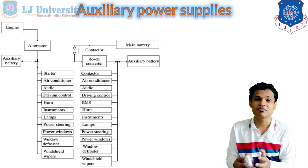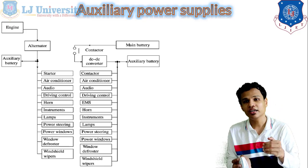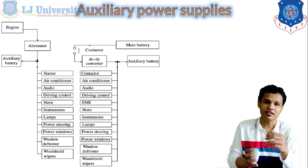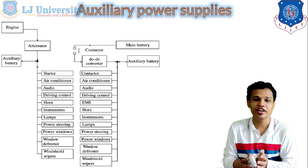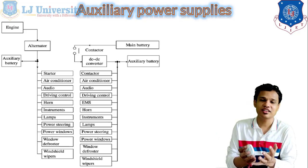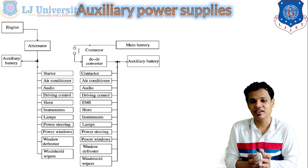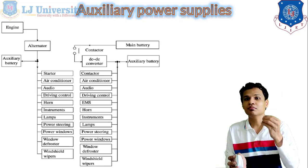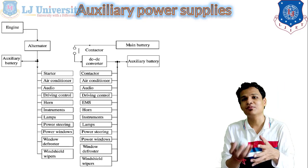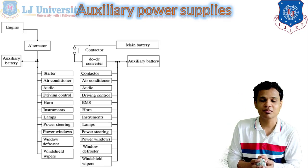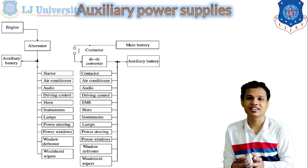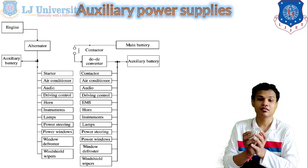The EMS — energy management system — is included. The horn will work as an auxiliary system. The instruments, meaning different dashboard instruments, are auxiliary. The lamps — headlamp, tail lamp, side lamp — are all auxiliary systems. Power steering, power windows, and the window defroster are also types of the auxiliary power system. Windshield wipers are connected as an auxiliary system as well.